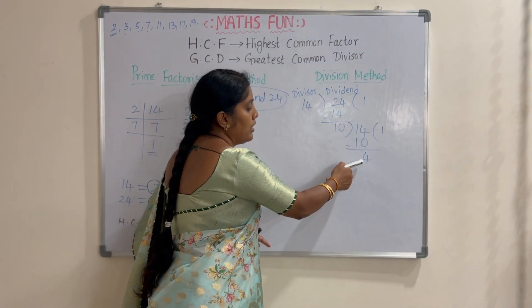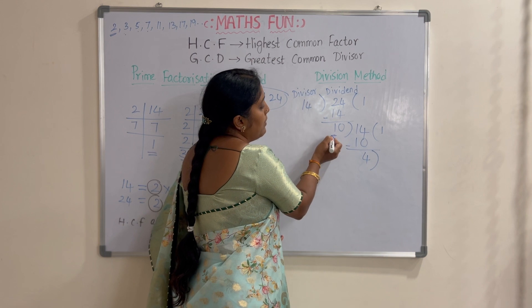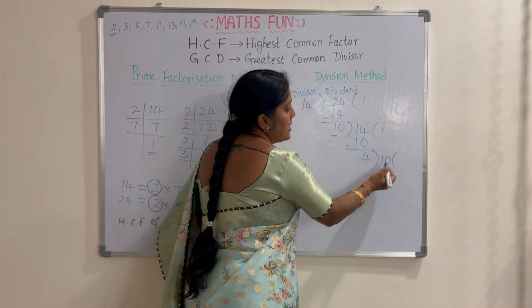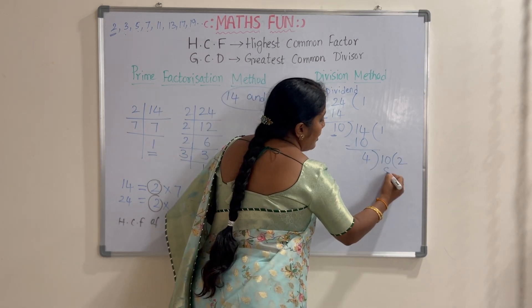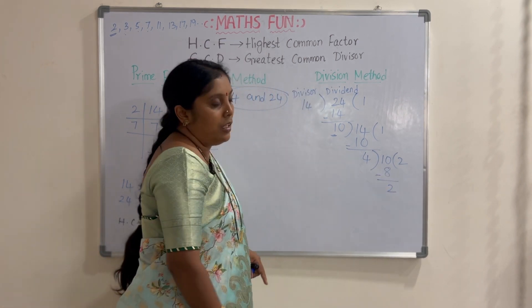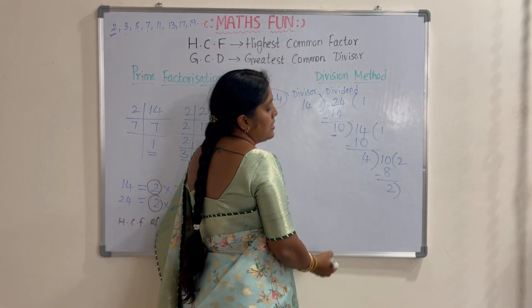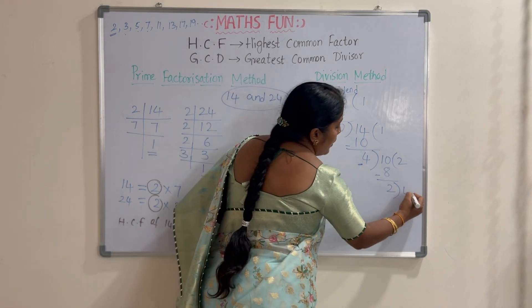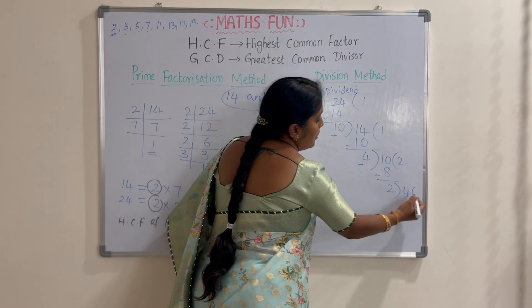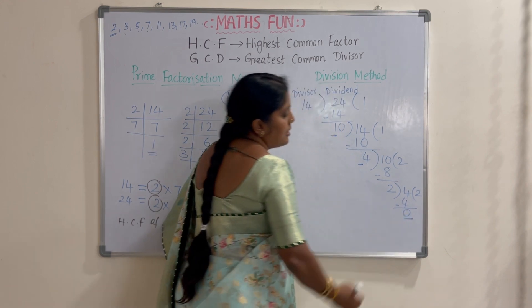So remainder 4 becomes the new divisor and the previous divisor 10 becomes the dividend. Now 4 divides 10: 4 twos are 8. Subtracting: 10 minus 8 is 2. We got remainder 2. This 2 becomes the new divisor and the previous divisor 4 becomes the dividend. Dividing 4 by 2: 2 twos are 4. When we subtract, the remainder is 0.